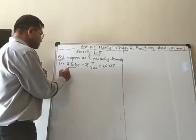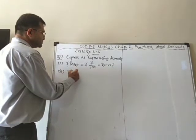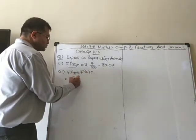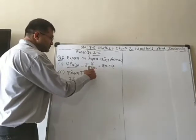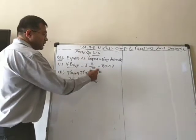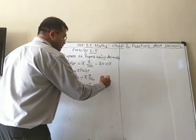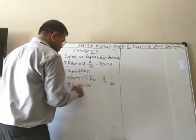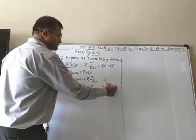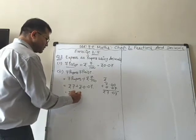Second is 7 rupees 7 paise. The 7 rupees is already there, so we keep it as is. Plus 7 paise, we do the same: rupees 7 upon 100 equals 0.07. So rupees 7.00 plus 0.07 gives us rupees 7.07.